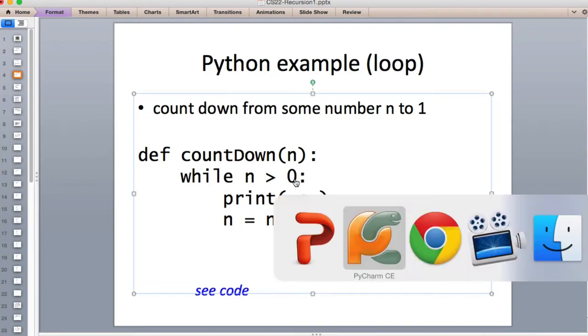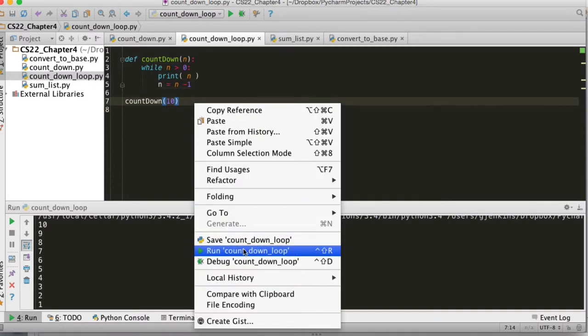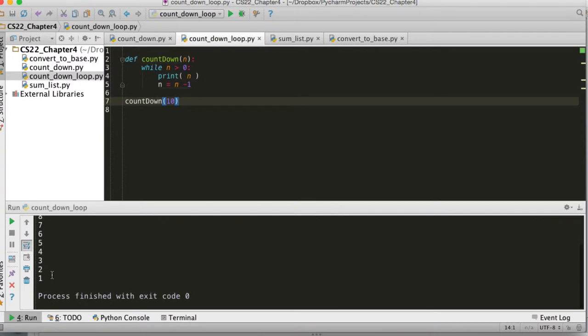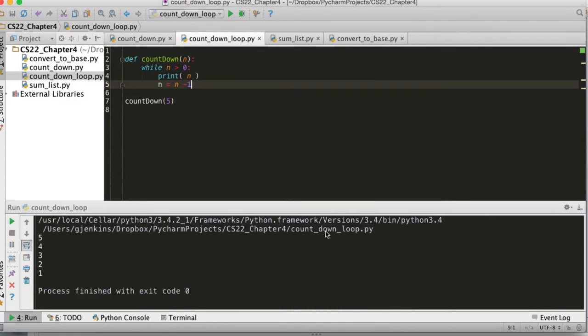Let's look at this code running. Here it is, and I call countdown of 10, and we run it. You'll see it counts down from 10 down to 1. It works fine. We can change that to countdown from 5 to 1, and it works correctly.